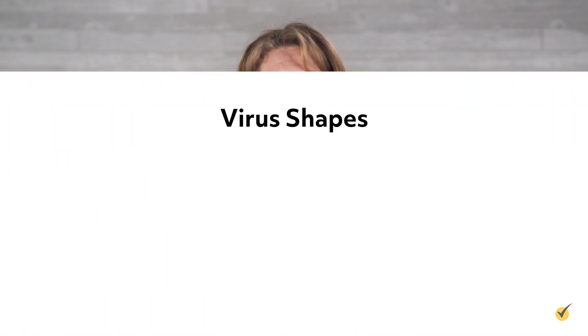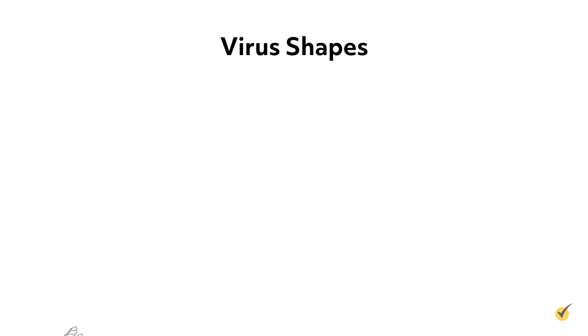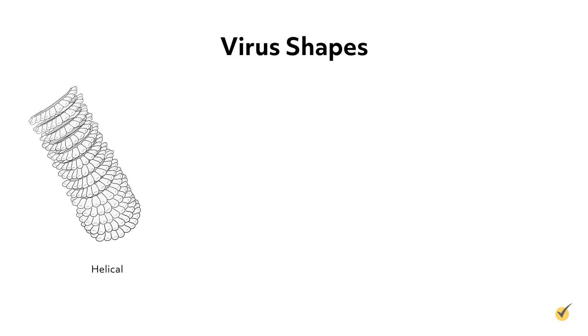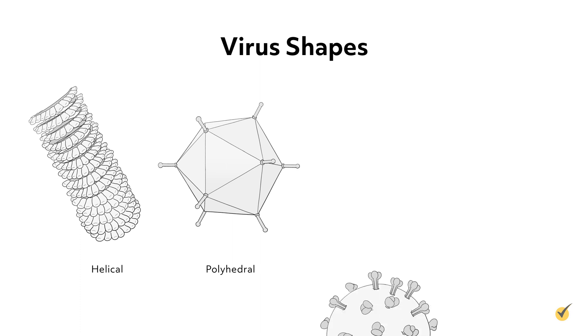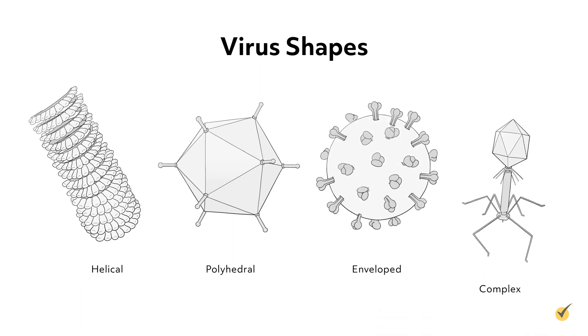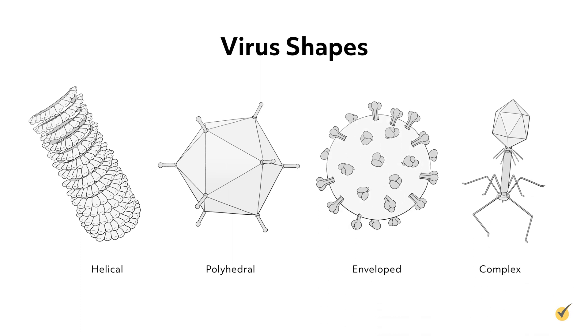The envelopes develop from small pieces of the host cell's plasma membrane during the budding process. Viruses come in various shapes such as helical, which are rod-like, polyhedral, which are many-sided, enveloped, or complex, which has various odd shapes.